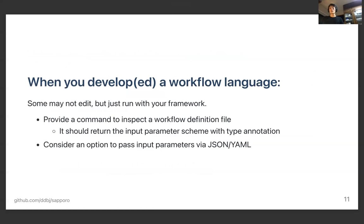When you develop a workflow language, or if you are a maintainer of an existing workflow language, sometimes it is very hard to inspect a given workflow definition to extract the required input parameters or such information. So please provide a command-line inspector, which takes the definition file as input and returns the input parameter schema. Ideally, input parameters should be represented as structured data with type annotation. And it would also be a good idea to have an option to pass the input parameters via a JSON or YAML file.